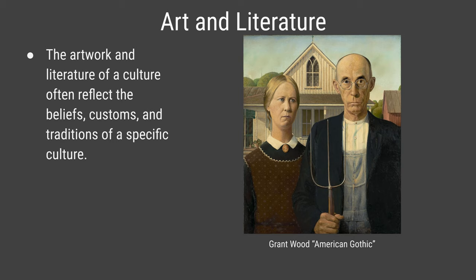Another example is 'American Gothic' by Grant Wood, which shows a farmer and his daughter in front of a Gothic-style house. It represents what people were like in the American West during the early 20th century — painted in 1930, it captures life in that era. So art reflects the culture it comes from, whether paying tribute to ancient Greek thinkers during the Renaissance or depicting American rural life in the early 1900s.